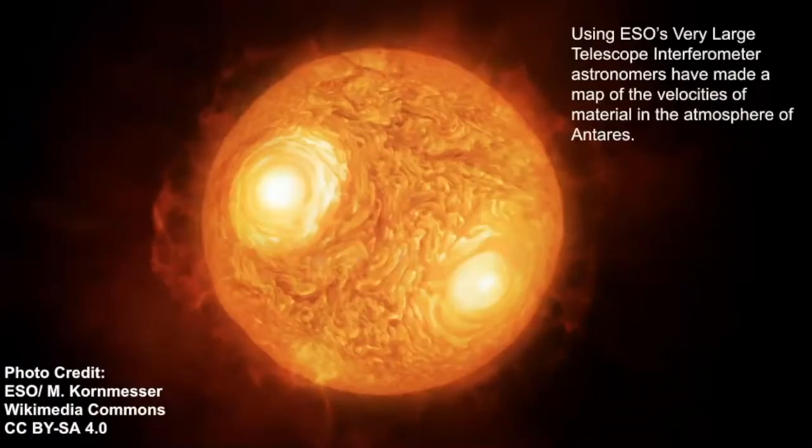Some other cool things about Antares is that its surface was mapped by the European Space Observatory's very large telescope interferometer. And this hasn't really been done for many other stars besides our own sun. So this just shows you that this huge, it almost looks like two eyes, doesn't it? Staring right at us.